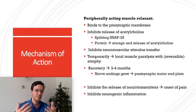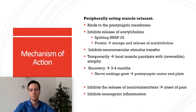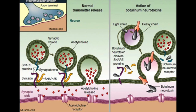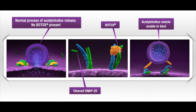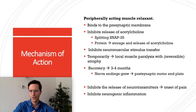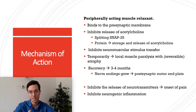How does it work? Botox is a peripheral-acting muscle relaxant. It binds at the presynaptic membranes of neurons and inhibits the release of acetylcholine by splitting a protein called SNAP-25. SNAP-25 is involved in the storage and release of acetylcholine at presynaptic membranes. Splitting SNAP-25 leads indirectly to inhibition of muscular stimulus transfer, resulting in temporal local muscle paralysis with reversible atrophy. Recovery takes three to four months because nerve endings need to grow again and reconnect with the postsynaptic motor end plate.